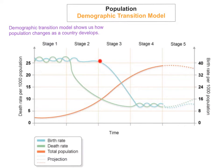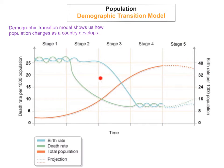In stage 3, the birth rate starts to decrease and the death rate continues to decrease as well. The improvement in technology, improvement in healthcare and sanitation, better medical care and education, and better use of family planning and contraceptive methods gives people a better understanding — therefore they have fewer children and also fewer people die.